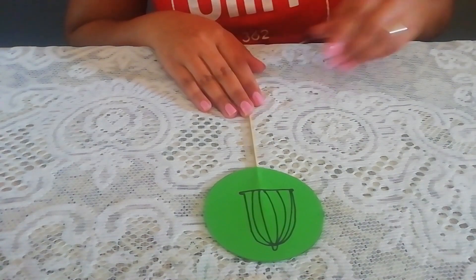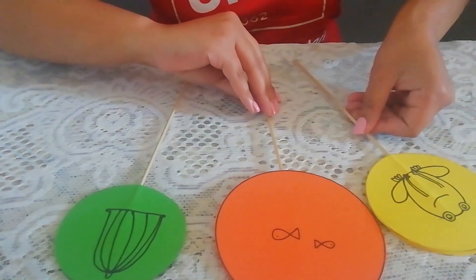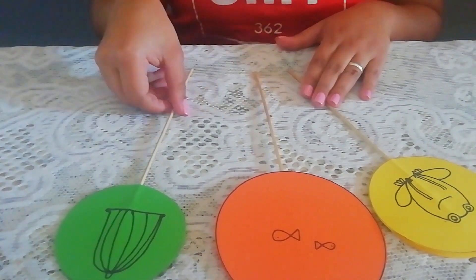You can make many different kinds using different colors and even different shapes. Here are some of our examples.